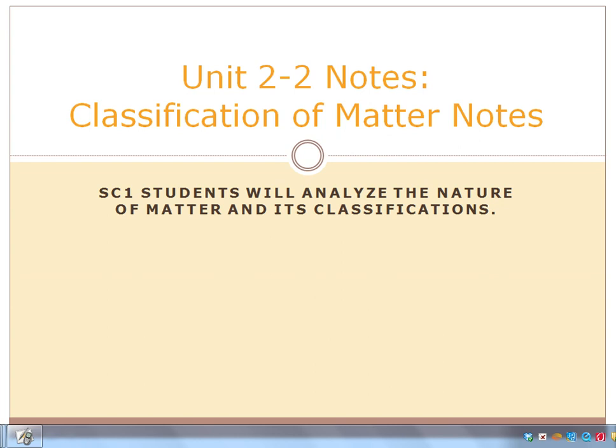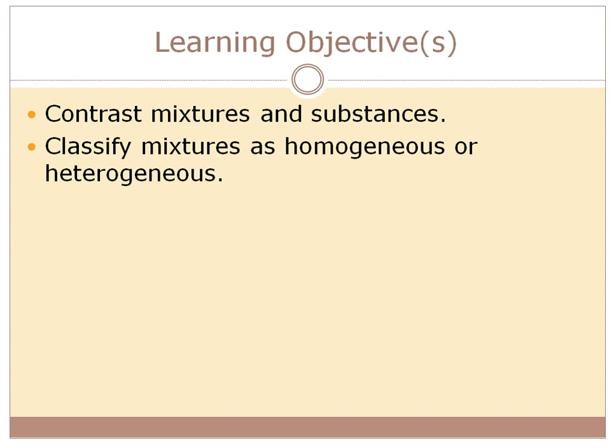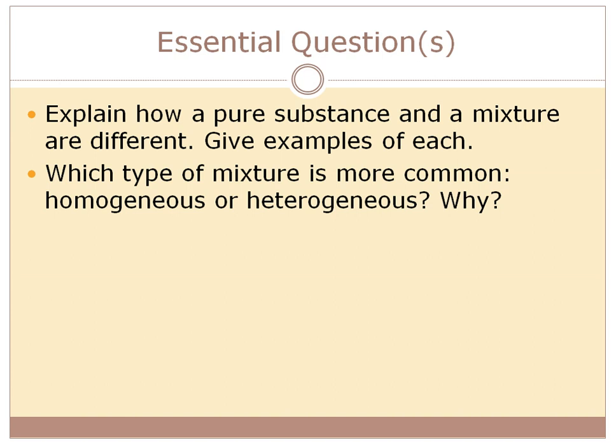This is Unit 2-2 Notes, and we're going to learn about matter in more detail and classify it into different groups. Our learning objectives are to contrast mixtures and substances, and to tell the difference between homogeneous and heterogeneous mixtures. Our central questions: how are substances and mixtures different, give examples, and which is more common — homogeneous or heterogeneous — and why?